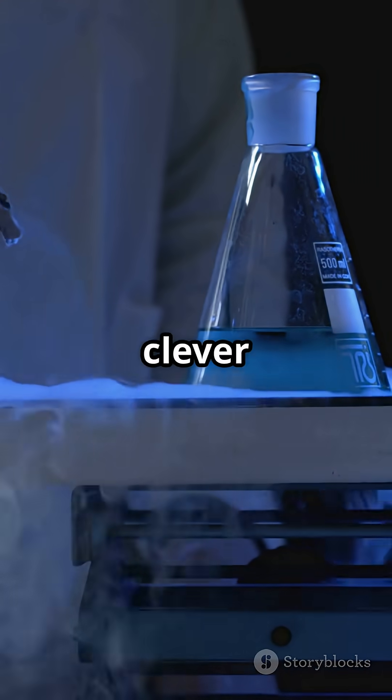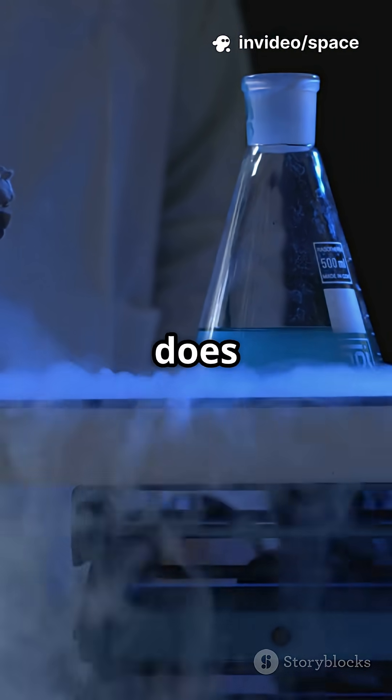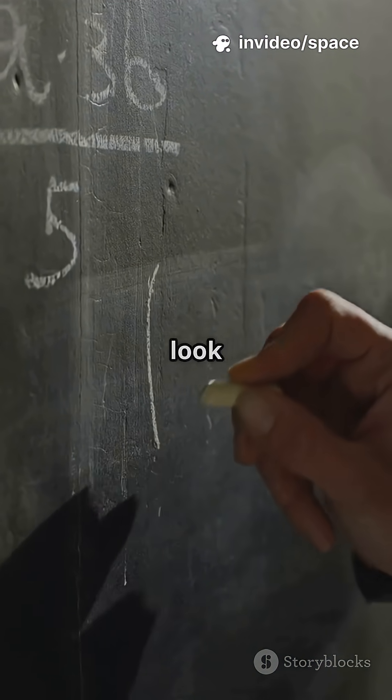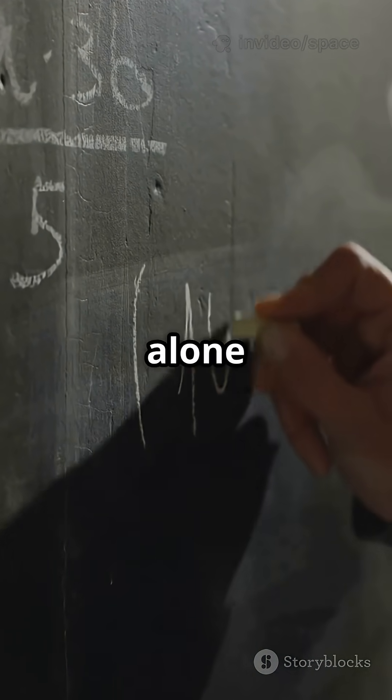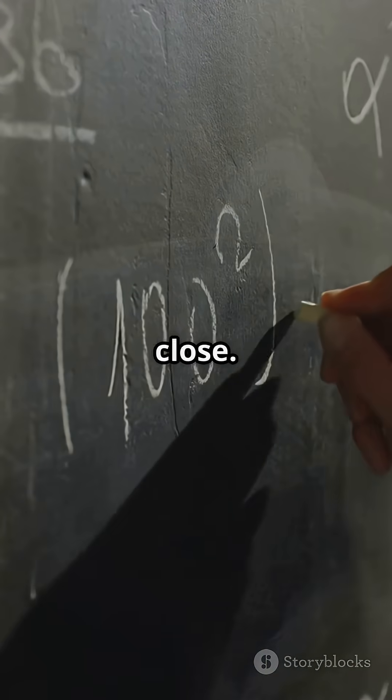He did it by introducing a clever twist. Imagine a virtual engine at absolute zero that does nothing. Turns out, if you look at the math, the second law alone means you can't reach absolute zero, and entropy stops changing as you get close.